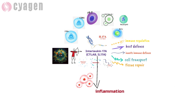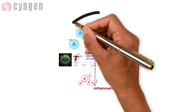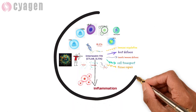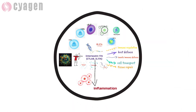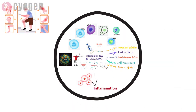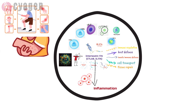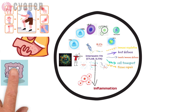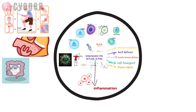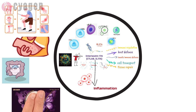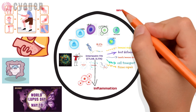Several chronic inflammatory diseases are associated with high levels of IL-17A cytokine, including rheumatoid arthritis, psoriasis, multiple sclerosis, inflammatory bowel diseases, and systemic lupus erythematosus.